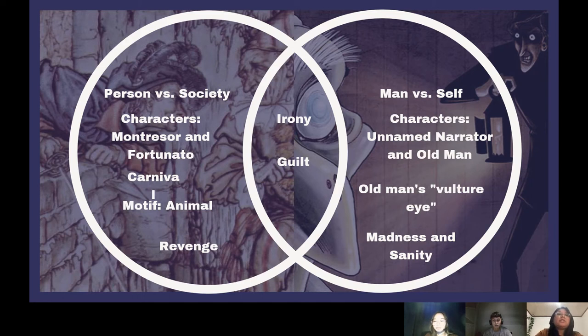In the first part of the story, Montresor was constantly ridiculed, which made him plan his revenge against Fortunato. As stated in the story: 'The thousand injuries of Fortunato I had borne as I best could, but when he ventured upon insult, I vowed revenge.'